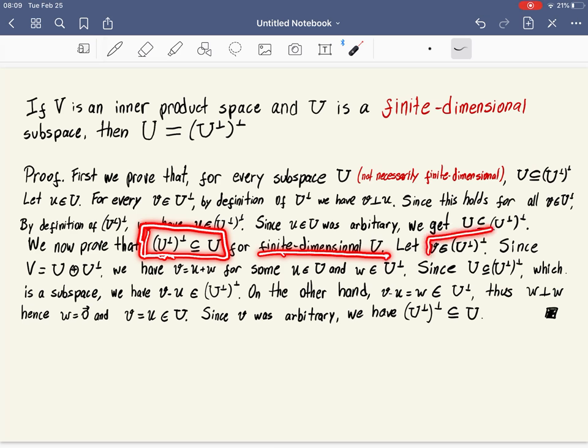As usual, we start with some vector from the first set. And after some argument, we're going to show that this vector is in U. So if we start assuming that u is here, and we conclude that u has also to be here,